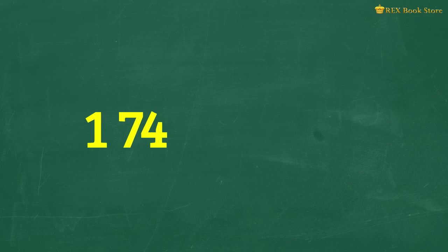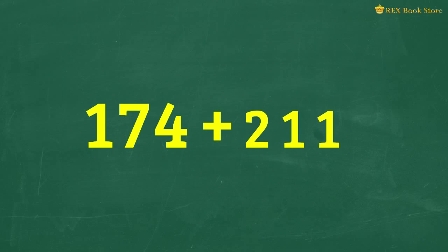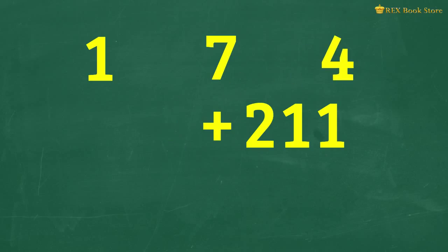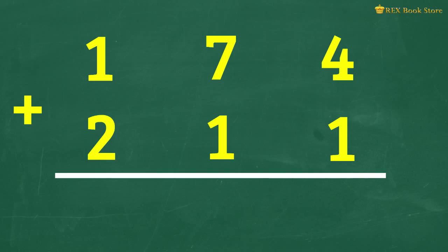Now let's try adding 174 and 211 without using manipulatives. Like before, we'll be grouping together the hundreds, tens and ones, aligning them like so. We'll add the ones first.